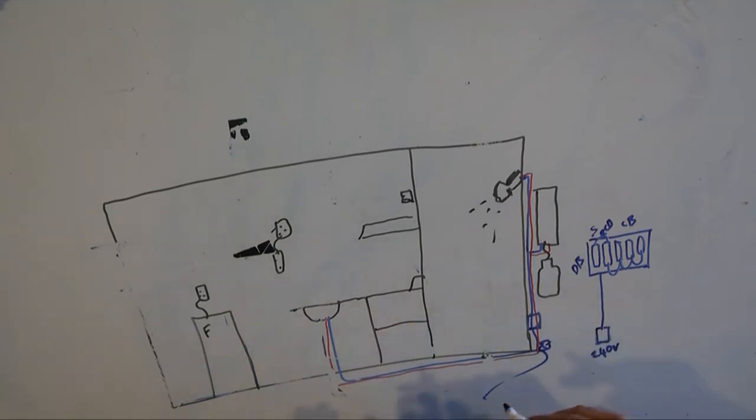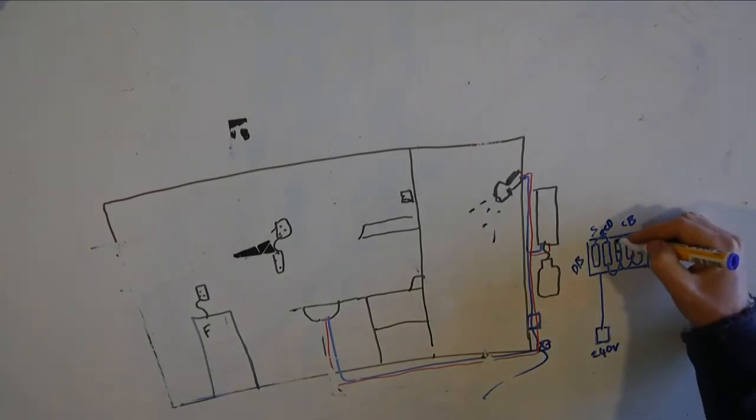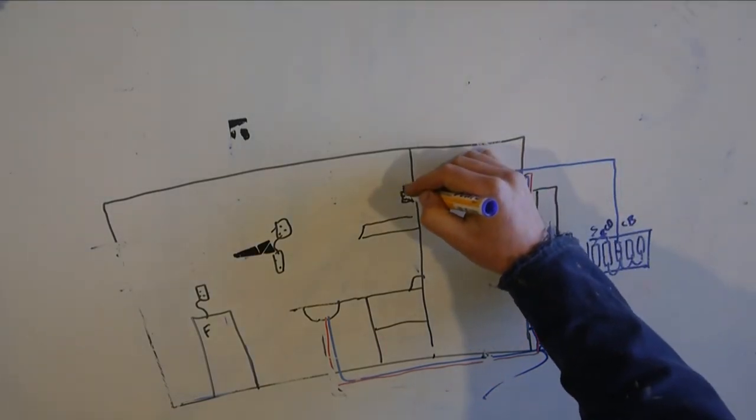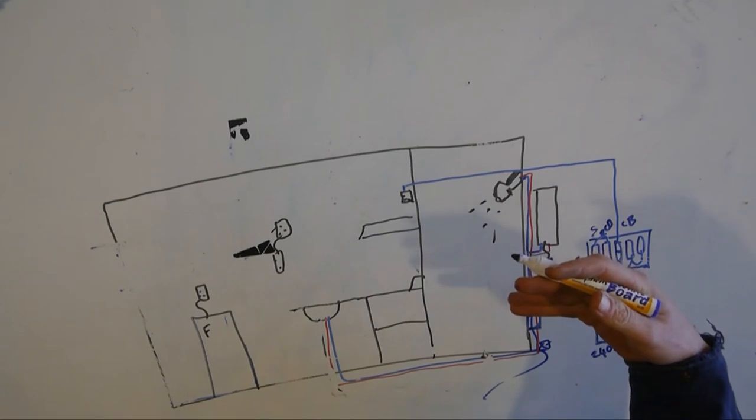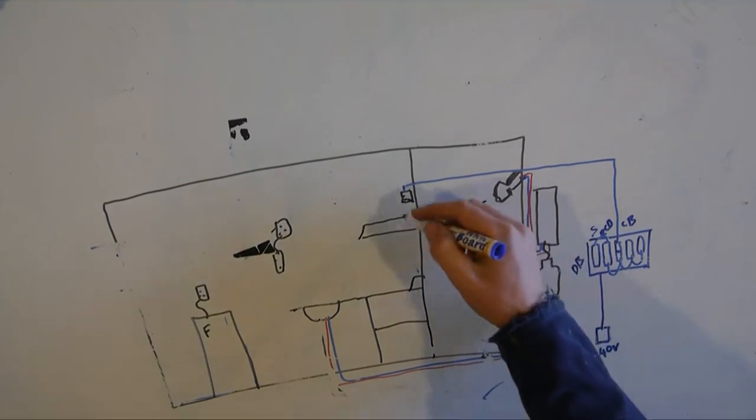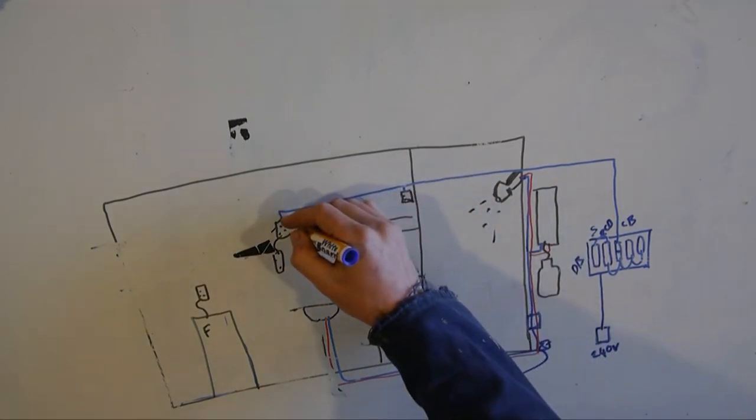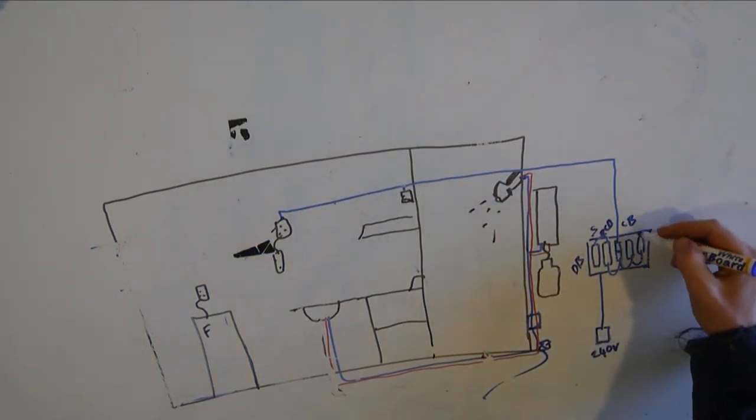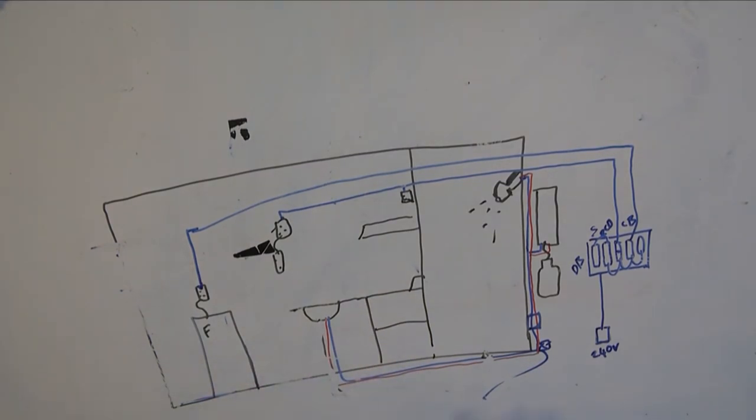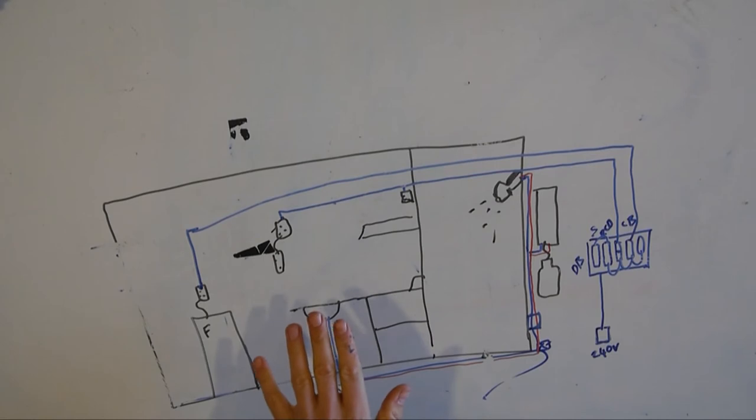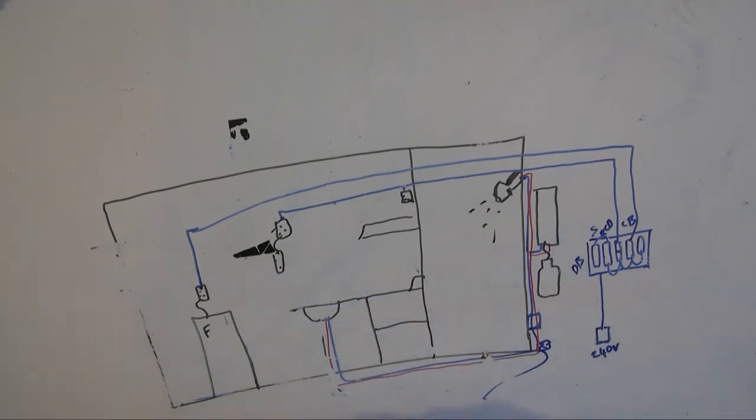And then that goes to the RCD, which is basically a safety device, which is mandatory in caravans or tiny houses and permanent homes in New Zealand. And then, we go into, in our case, we've got three circuit breakers. So we've got three separate circuits. And those circuit breakers are protecting the wiring of the circuit. So if the wiring gets too hot under too much load, that'll trip and kill the current so it doesn't fry the wiring.